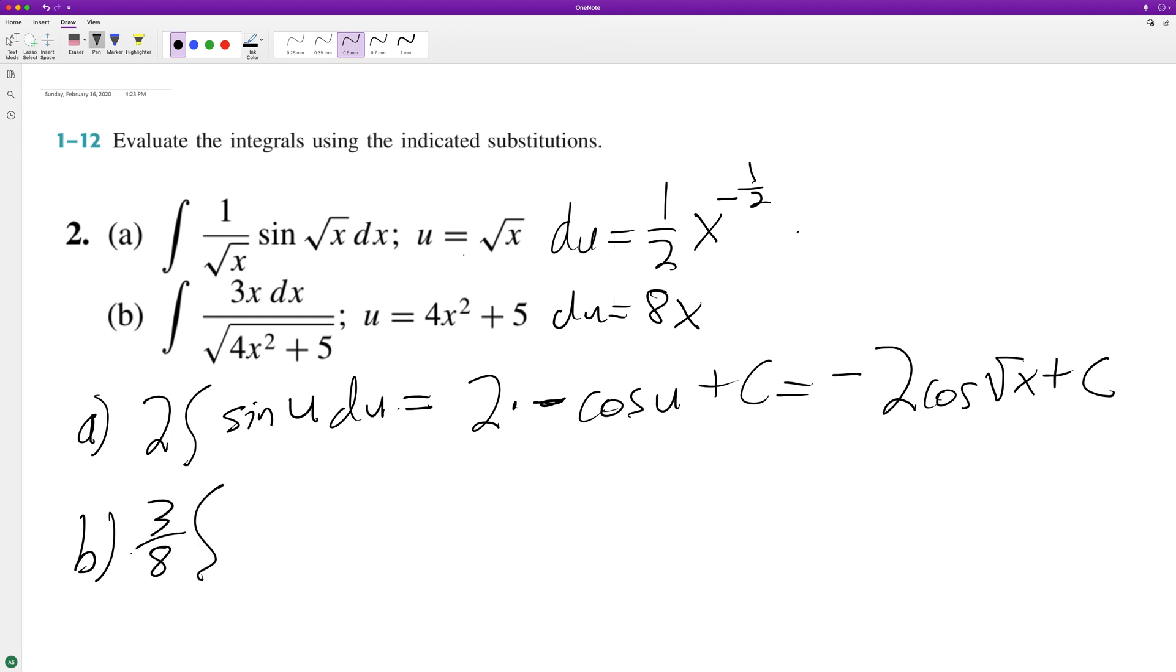And we're left with u on the bottom here raised to the negative 1/2, same thing as 1 over the square root of u du. When we integrate, we get 3/8 times u raised to the negative 1/2 plus 1, which is 1/2. And then negative 1/2 plus 1 on the bottom.